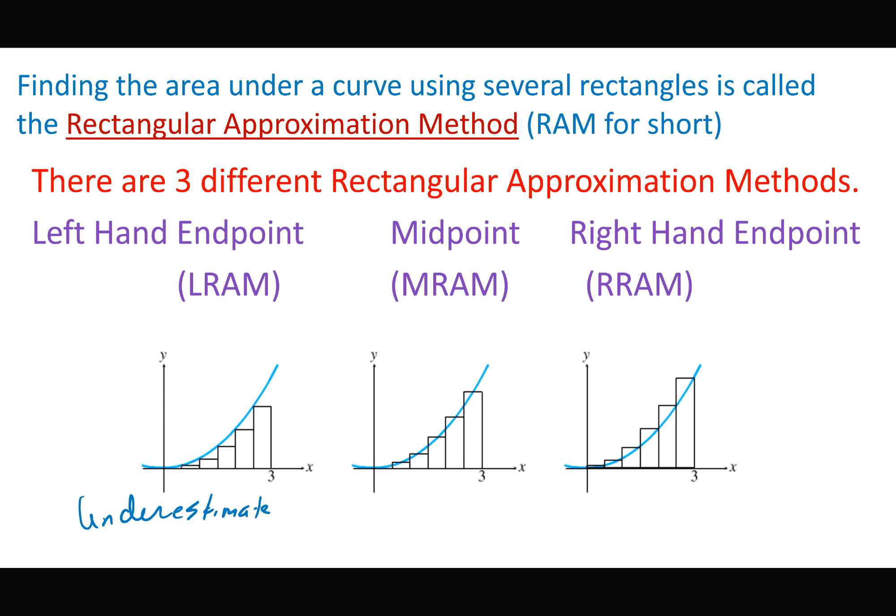With RRAM, the top right corner of each rectangle touches the line, and we can see that is going to be an overestimate for this situation. If it were concave down it'd be different, but for an increasing function, the right-hand endpoint gives an overestimate — rectangles go above the line.